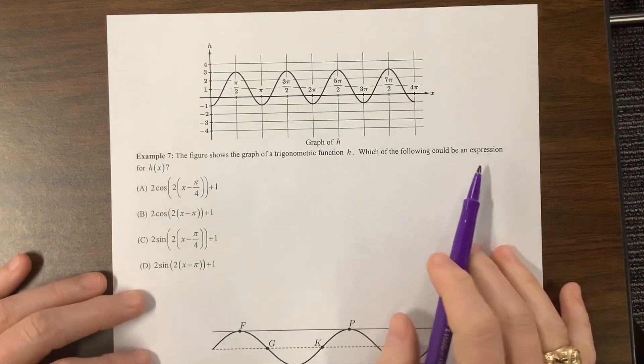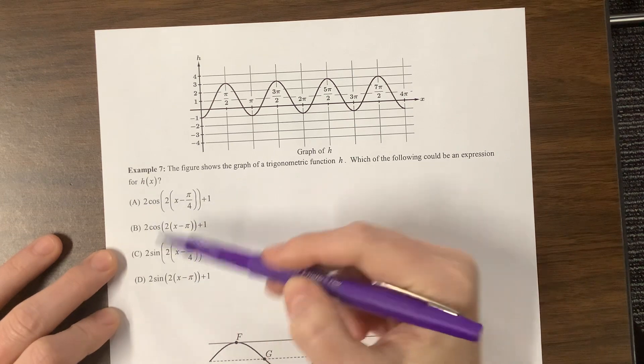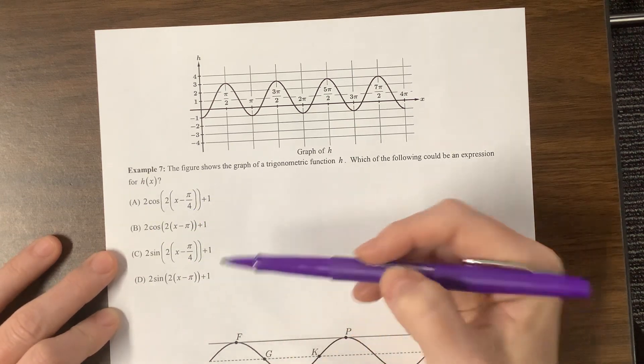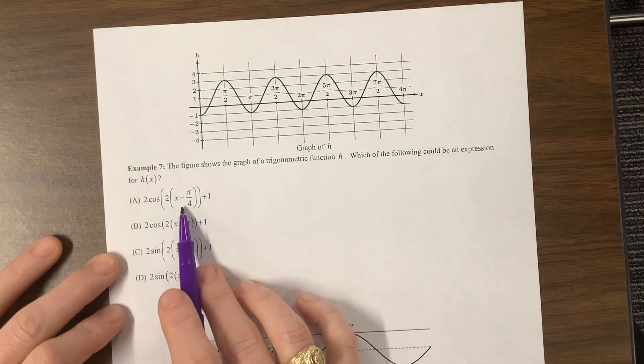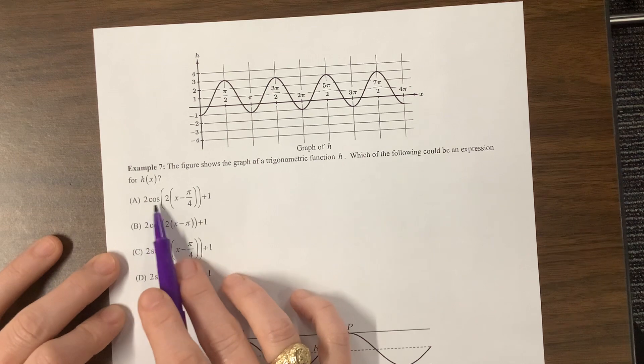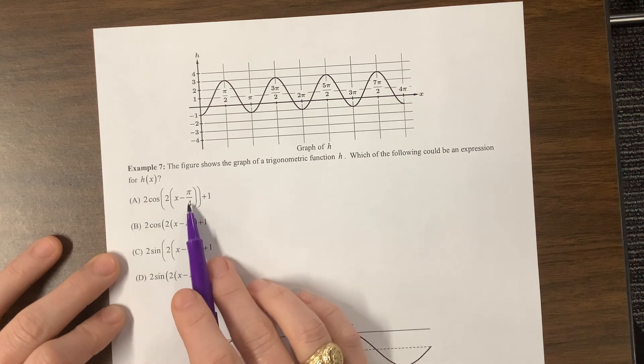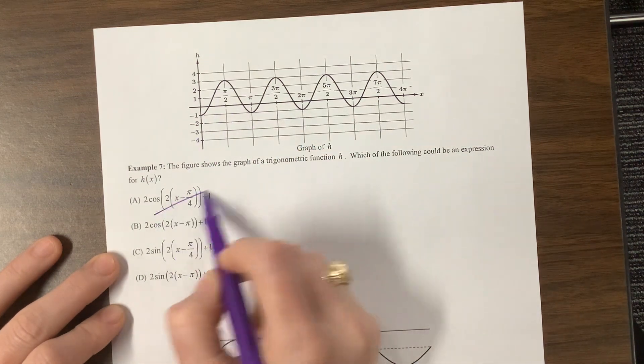Here's another one, which of the following could be an expression. Notice the amplitude is the same, the period is the same, the midline will all be the same on all these equations. So really, we're just looking at the type of function and what kind of shift do we have. Cosine, when cosine is positive, we start at the very top, we have shifted it to the right pi over 4. So the very top should show up at pi over 4, it does not. So that doesn't look good to me.